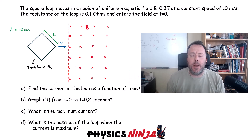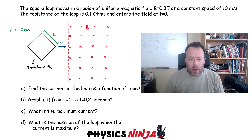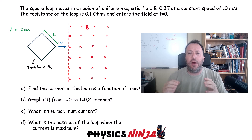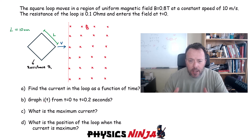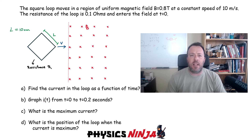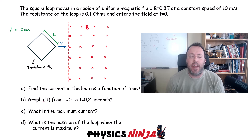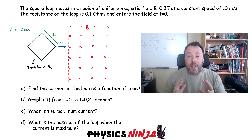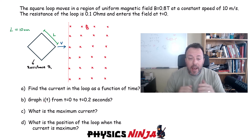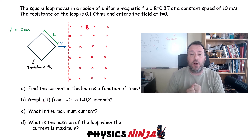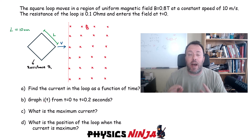Hi everybody, Physics Ninja here. Today we've got a great problem on magnetic induction. We're going to use Faraday's law. We have a square loop that moves in a region of uniform magnetic field. The magnitude of that field is 0.8 tesla and that loop is moving at a velocity of 10 meters per second. The resistance of this loop is 0.1 ohms and the point of that square loop is going to enter the field at time zero.